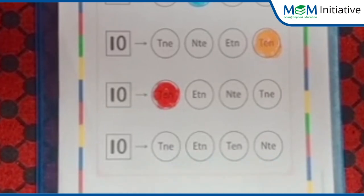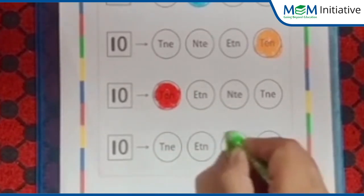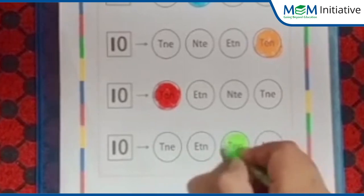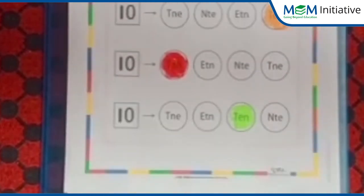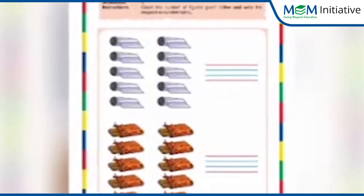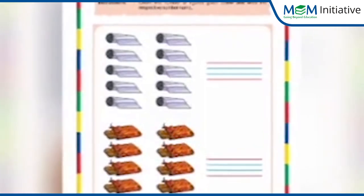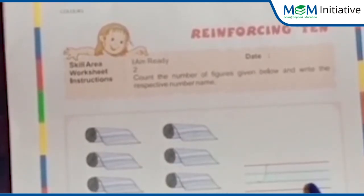Now let's move to the second worksheet. Here comes our second worksheet of reinforcing 10. Let's start. In this worksheet, we have to count the pictures given and write down the number name here.